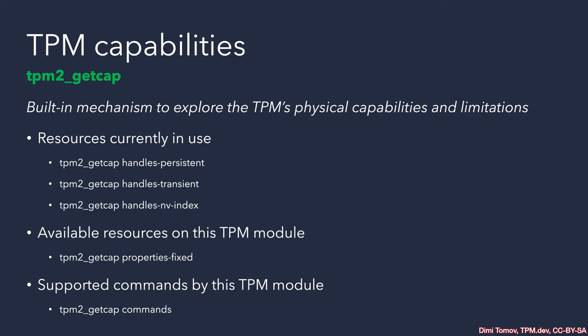The TPM2_GetCap command comes with many options. Most frequently, you'll need to check for a supported command or a supported algorithm. I definitely recommend looking at the help of this command to see all supported capabilities you can list. Handles are also something that often comes to mind — what are the current handles in use: transient, persistent, NV indexes, and so on. This is a very useful command, especially during development but also in production, to make decisions depending on how many users are on the platform.